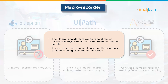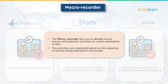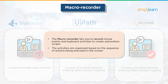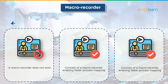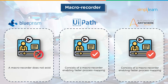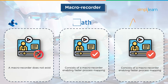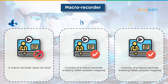Next up we have Macro Recorder. The Macro Recorder allows you to record mouse events and keyboard activities to generate automation scripts. These activities are arranged in a sequence and executed in the same sequential order. Blue Prism does not have a Macro Recorder. UiPath and Automation Anywhere have a Macro Recorder which enables fast-term process mapping.